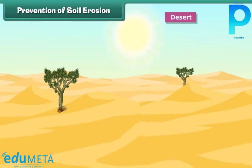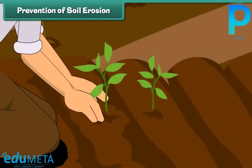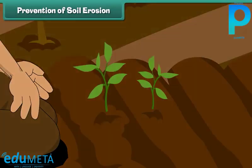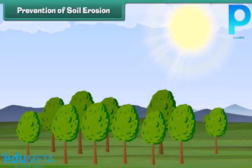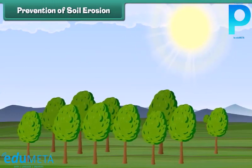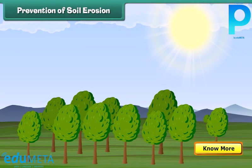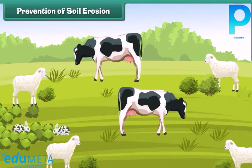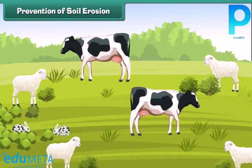There are many ways of preventing soil erosion. One of the most common ways is to grow more and more trees. The roots of trees hold the soil firmly and do not allow it to wash away easily. Trees planted across the wind direction protect soil against high velocity winds. Controlling overgrazing of land by animals also helps control soil erosion.